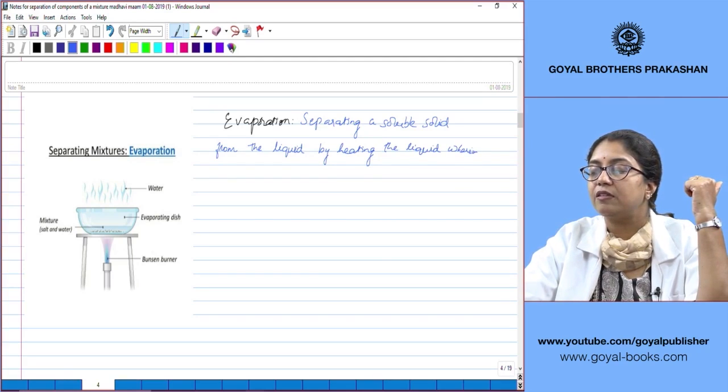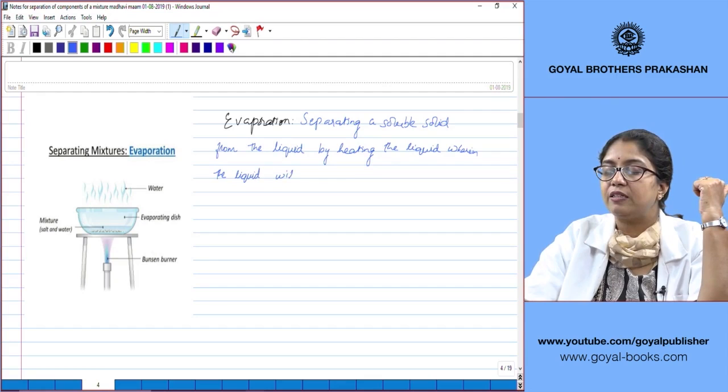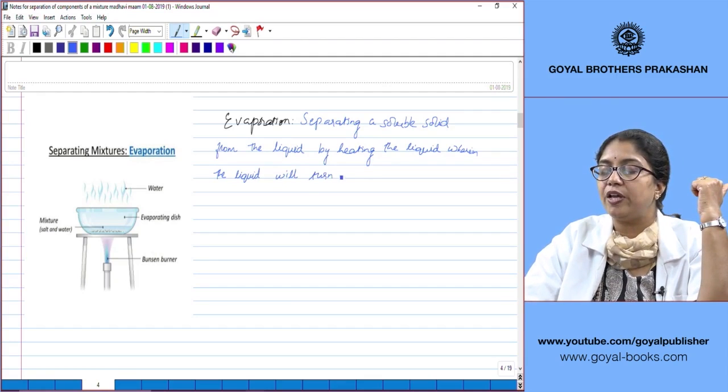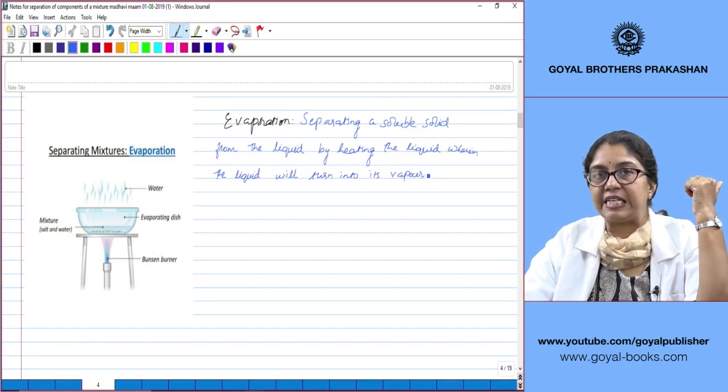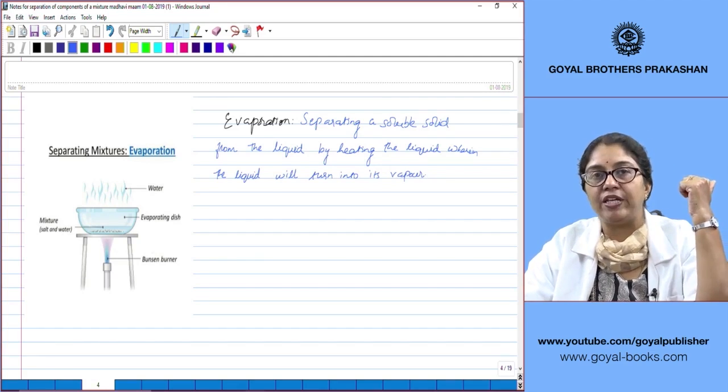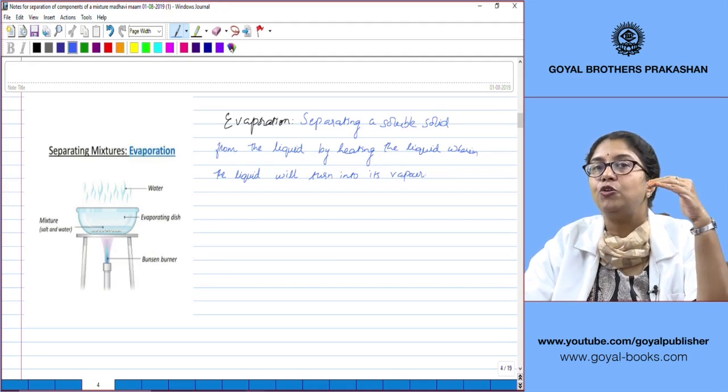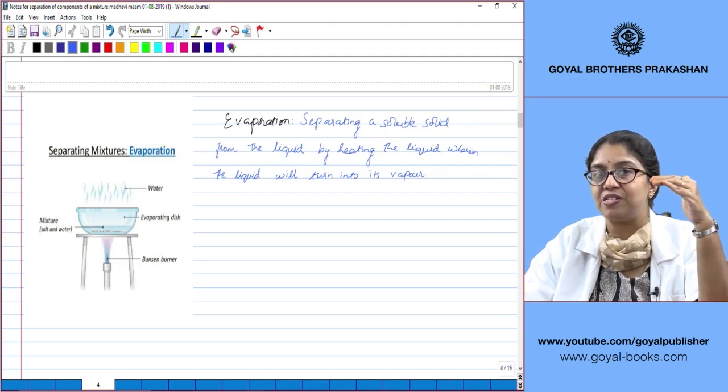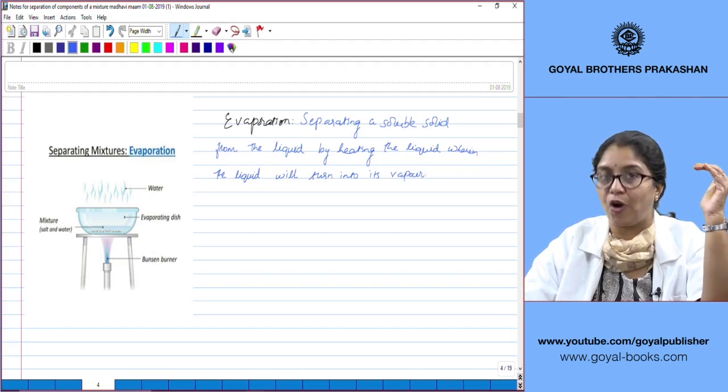The liquid will turn into its vapor. Basically, the difference between evaporation and boiling is in both cases you're converting a liquid to its vapor state, but in evaporation you are heating at a temperature much lower than the boiling point.